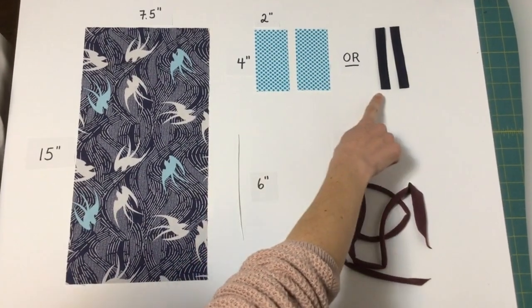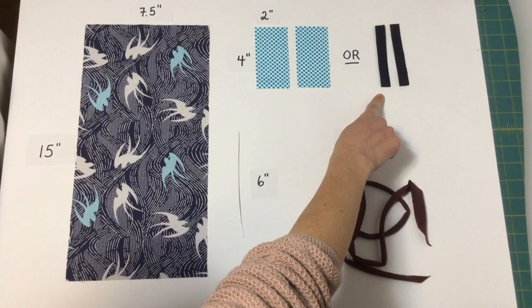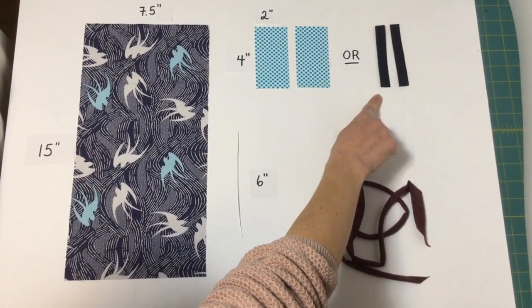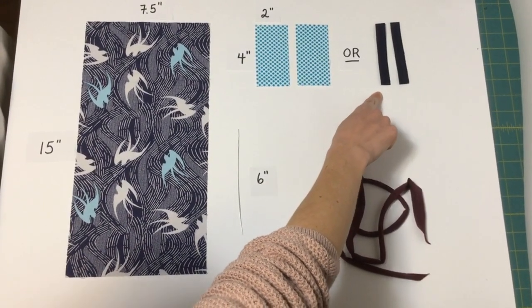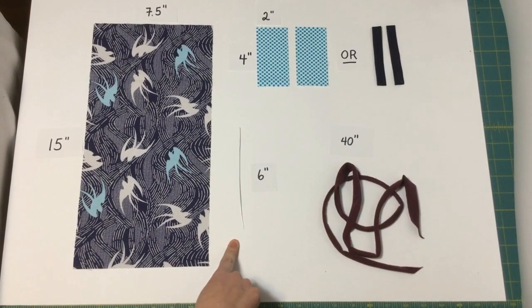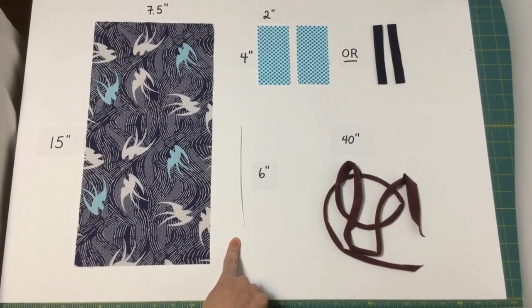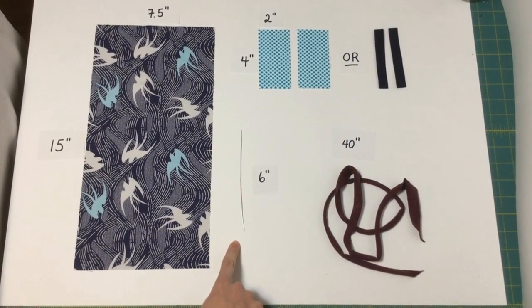Or if you have it on hand you can also use double fold bias binding, two pieces each cut to four inches long.